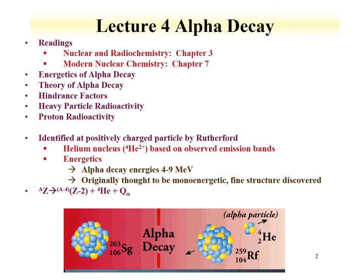What fine structure means is that alpha decay, when it goes to a daughter state, can decay to different levels in the daughter nucleus. The level energy differences are based on the differences in the alpha decay energies. So you can get information on the energy level differences from the differences in the alpha decay, and those will often be accompanied by gamma emissions.